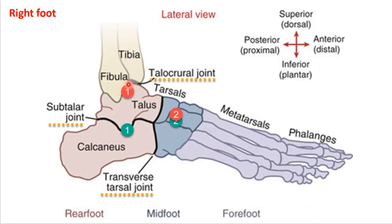At positions one and two (the red dots), those are the two joints making up ankle dorsiflexion — about half from each. At the green dots, you're getting inversion and eversion — most of it here and some there. So the midtarsal or transverse tarsal joint can do both movements: dorsiflexion-plantarflexion and inversion-eversion. At the talocrural joint, you only get dorsiflexion-plantarflexion, and at the subtalar joint you only get inversion-eversion.